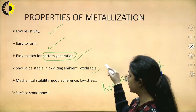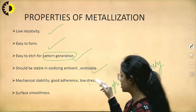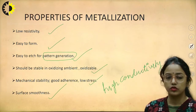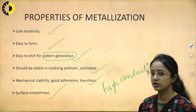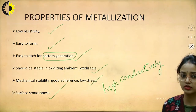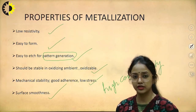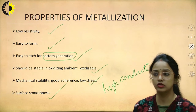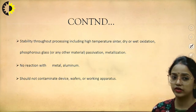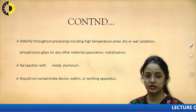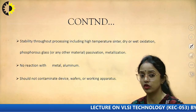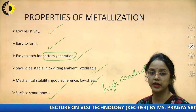It should be stable in an oxidizing ambient and have good metal stability, good adherence, low stress, and surface smoothness. It should not be reactive and should be stable against environmental conditions. It should have good mechanical stability, good adherence — sticking strongly to the IC walls — and remain stable throughout processing including high-temperature steps, dry and wet oxidation, phosphorus glass passivation, and metallization. It should not contaminate the device, wafer, or working apparatus.